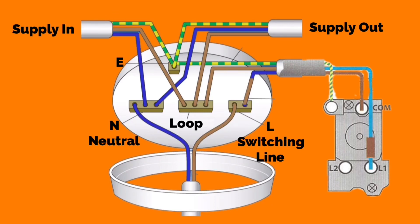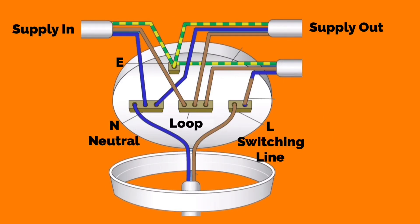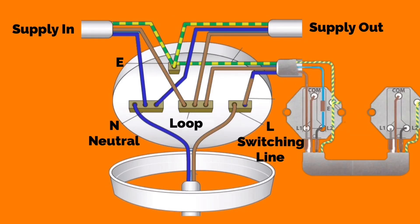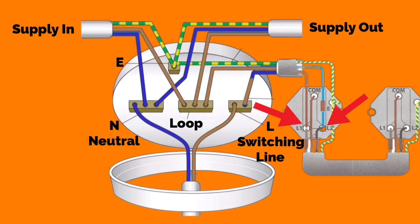This switch drop can be easily altered to two-way or two-way and intermediate switching. The cable shown for the one-way switch drop would be identical going down for a two-way configuration. With two-way switching, the drop to the first switch is still in twin and CPC. However, the terminations coming down will now go into L1 and L2, leaving the common terminal without a connection, and we introduce a three-core and CPC cable.